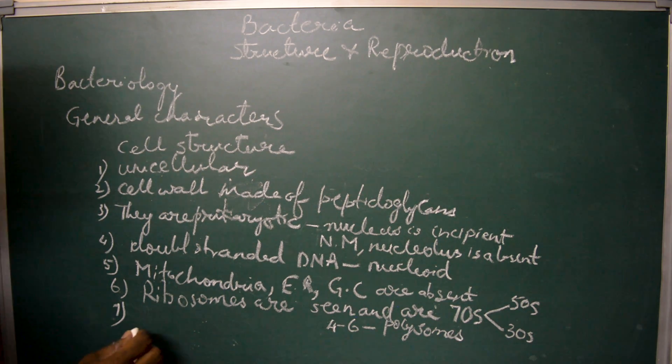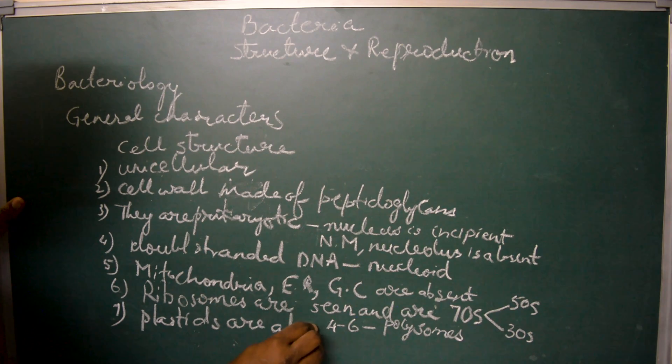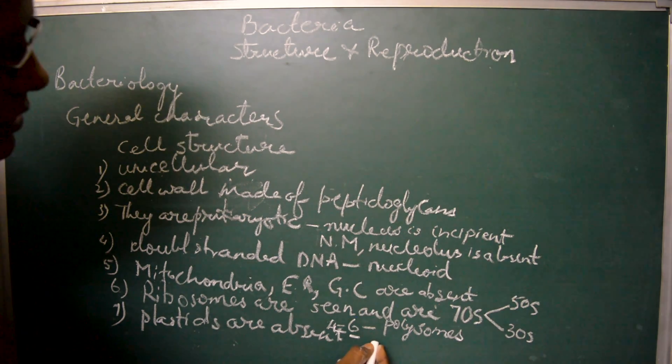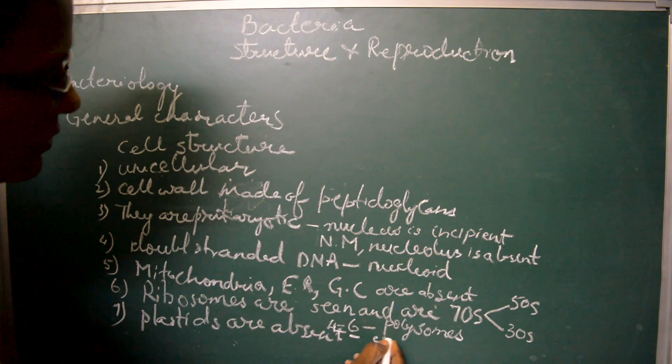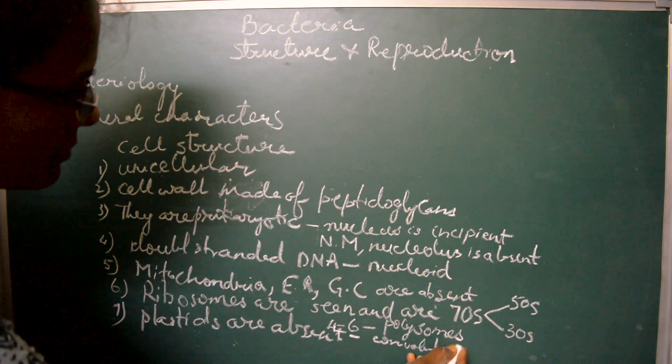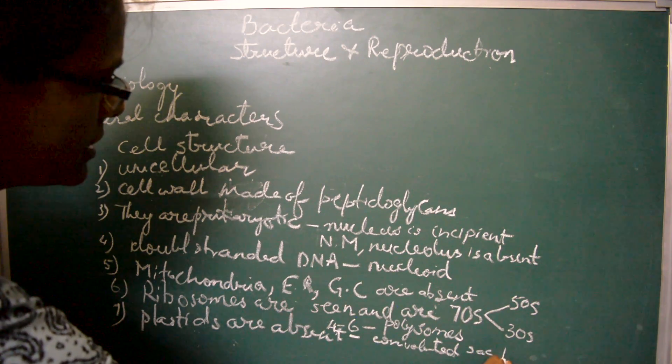Plastids are absent. But the chlorophyll pigment which is present in some autotrophic type of bacteria is seen in convoluted sacs which are formed from the plasma membrane.